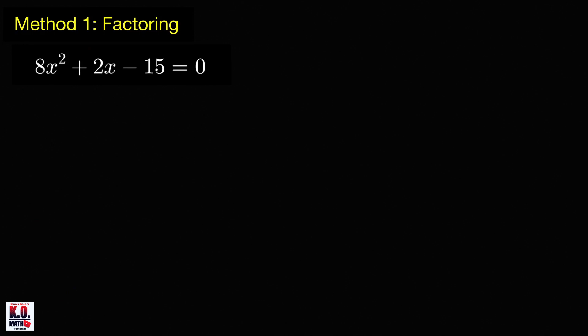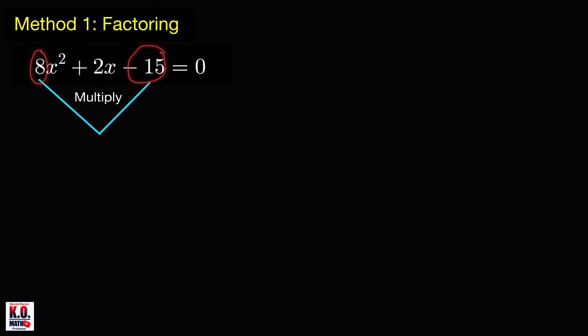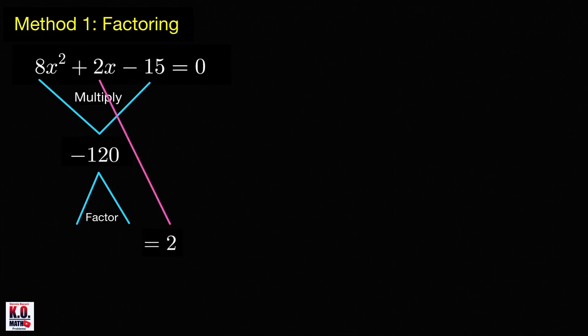To do that, what we're going to do is multiply a and c — the coefficient of x squared and the constant term, negative 15. So a times negative 15 gives us negative 120. Now we're going to factor negative 120 in such a way that the sum of the factors is equal to the coefficient of our middle term, which is 2. The factors of negative 120 whose sum is positive 2 are negative 10 and positive 12.